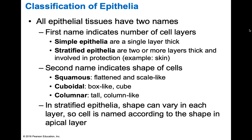Epithelial tissues have a two-part classification system. The first name indicates the number of cell layers. The second name indicates the shape of the cells. Simple epithelia have a single layer. Stratified epithelia are two or more layers thick — for example, skin cells will have more than one layer. The shape names are: squamous (flattened, scale-like), cuboidal (square, cube-like), and columnar (taller, column-like).